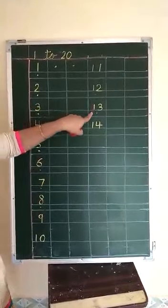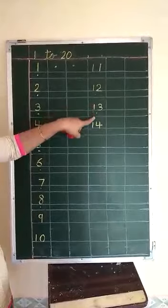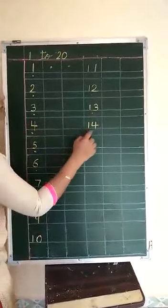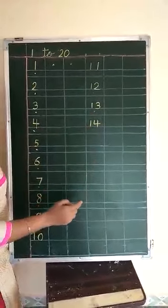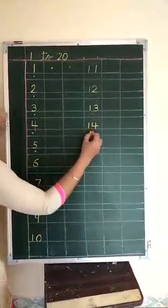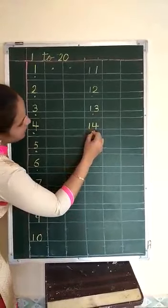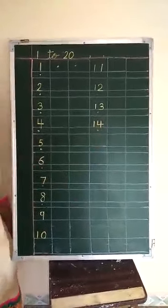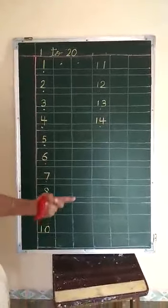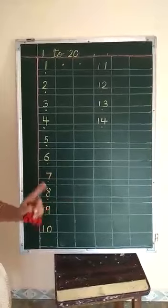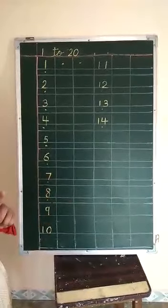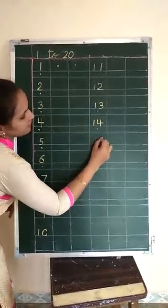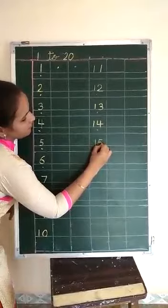Which number comes after 13? 14. Okay, now again put 1 dot. After 14, which number comes? 15. Write down 15. We have completed 11 to 15.